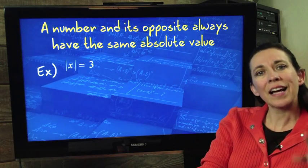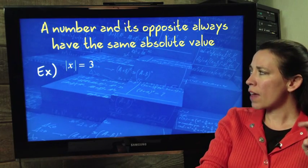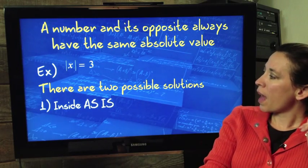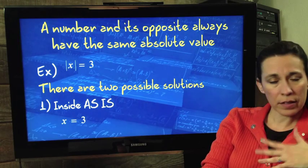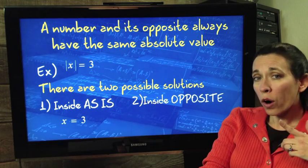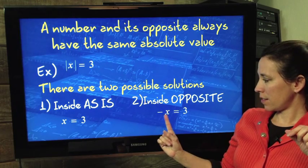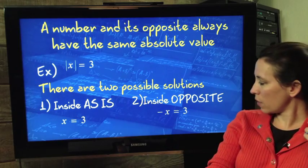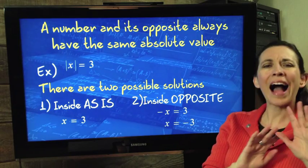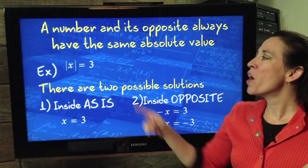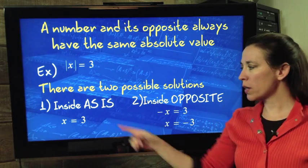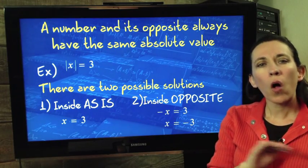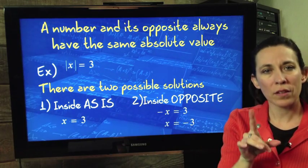But what if the inside is a variable? It's the same concept. If the absolute value of x is 3, then we have two possibilities. Either the inside is as is, in other words, x just equals 3, or the inside is its opposite. The opposite of x is 3. And when you divide both sides by that understood negative 1, we get x equals negative 3. I already know what you're thinking. Well, I know absolute value is 3. It has to be either 3 or negative 3. Why do I have to go through all of this as is opposites?